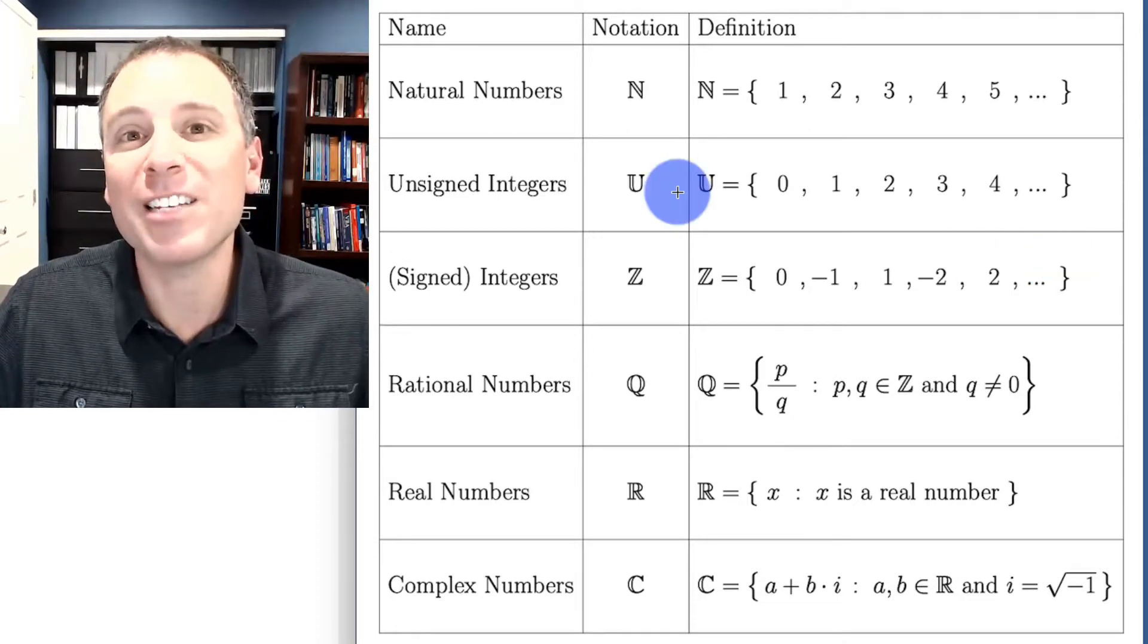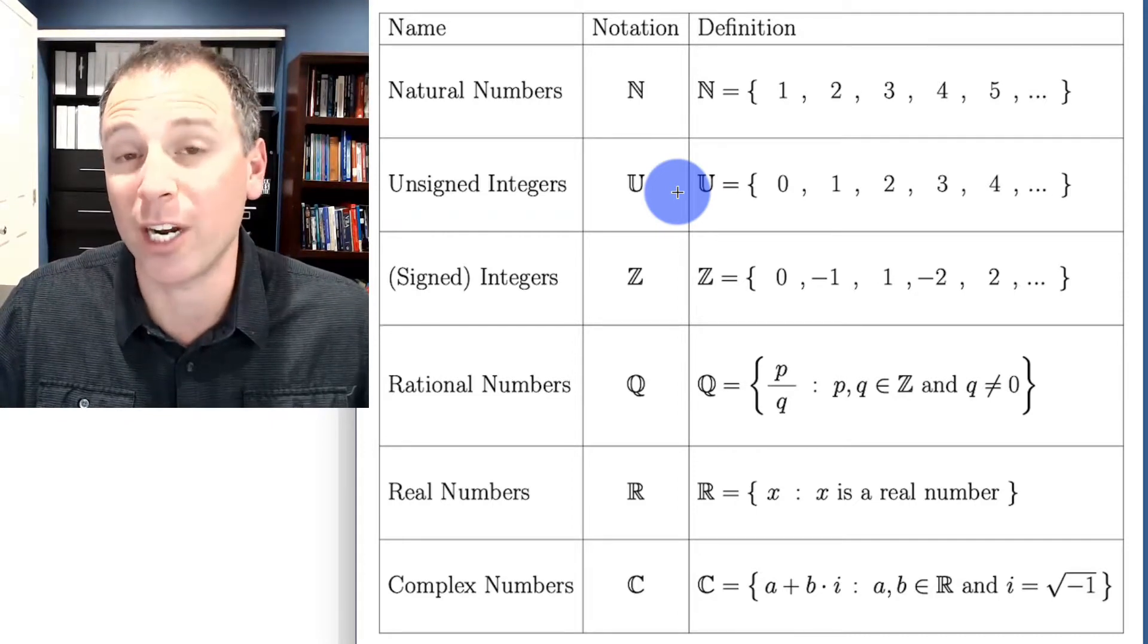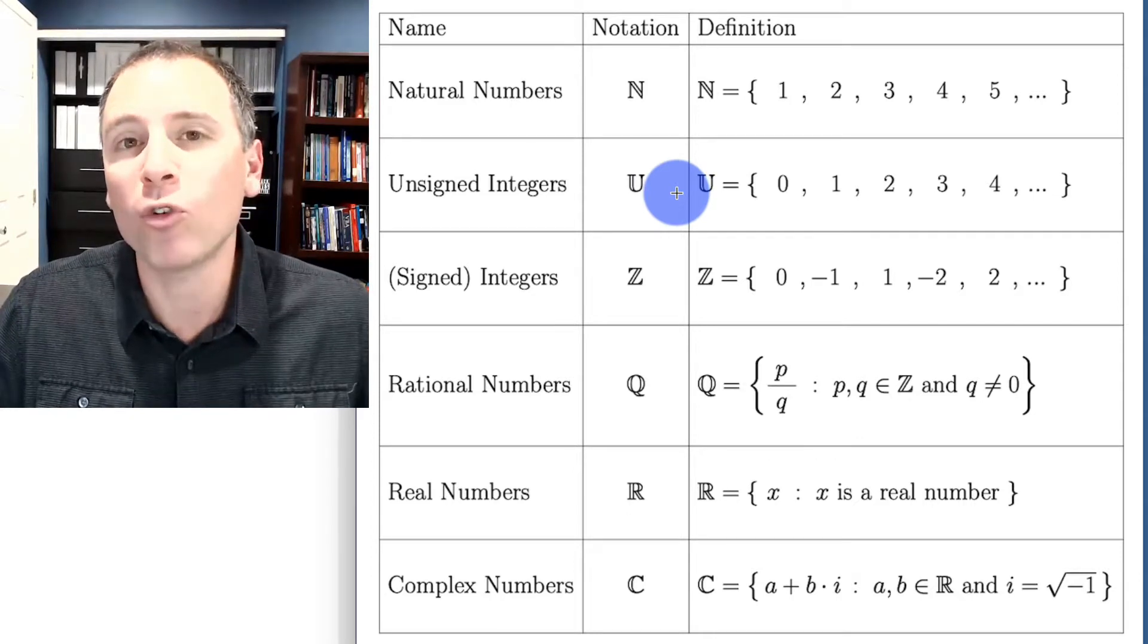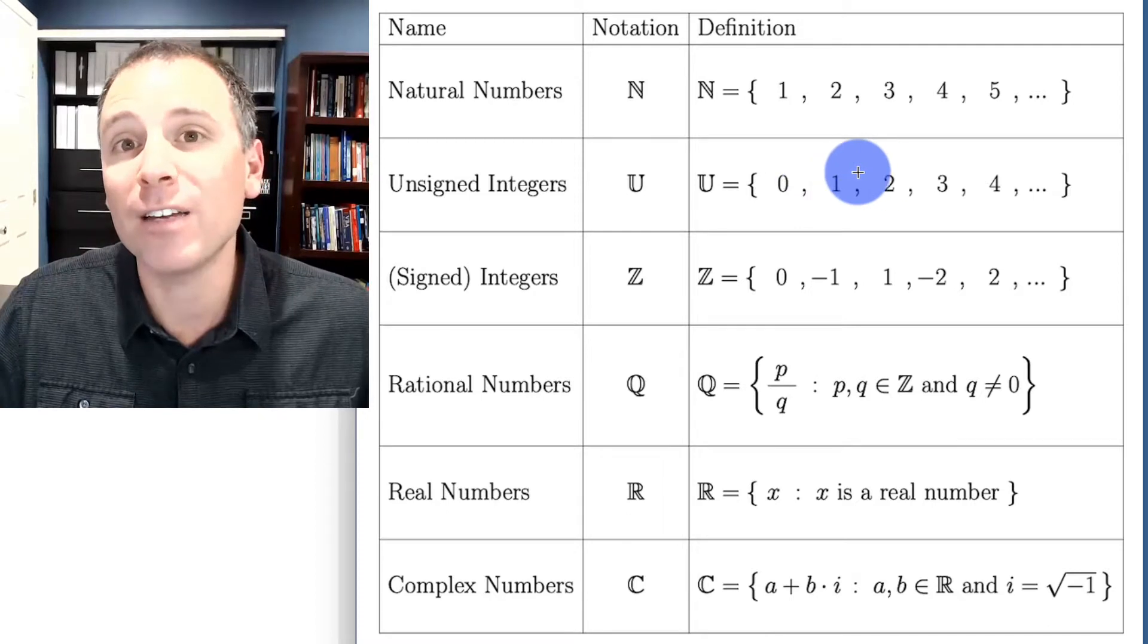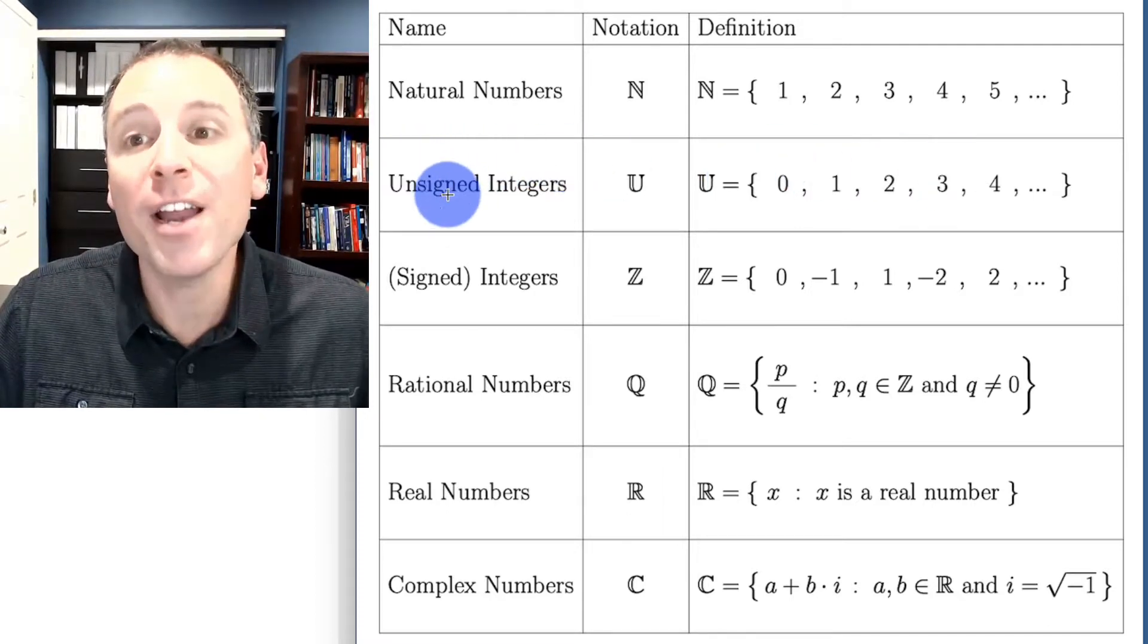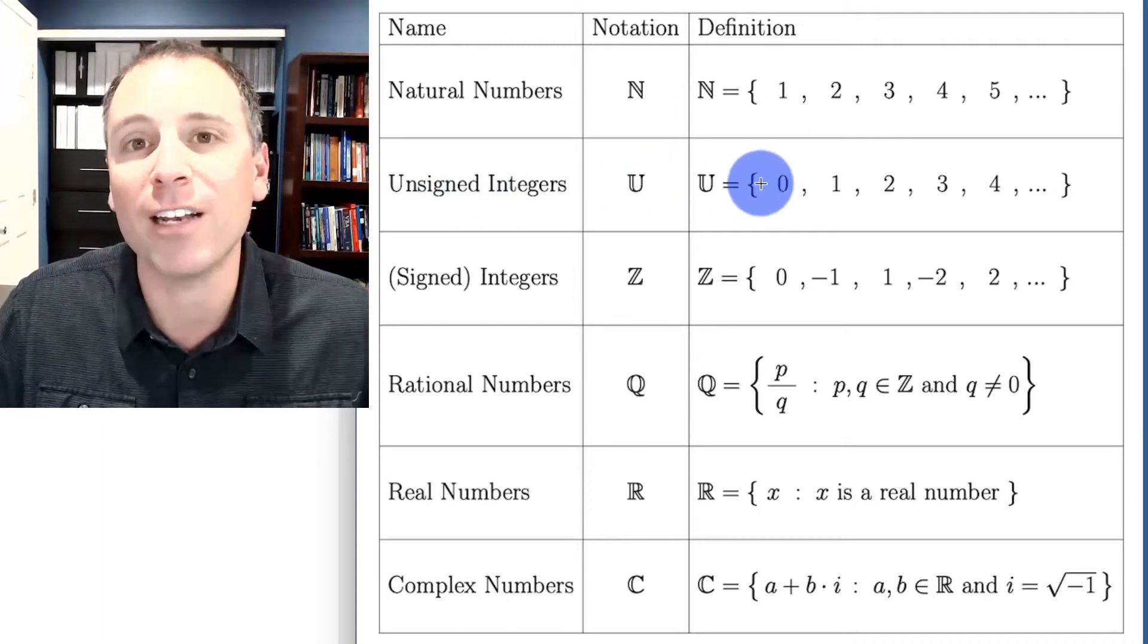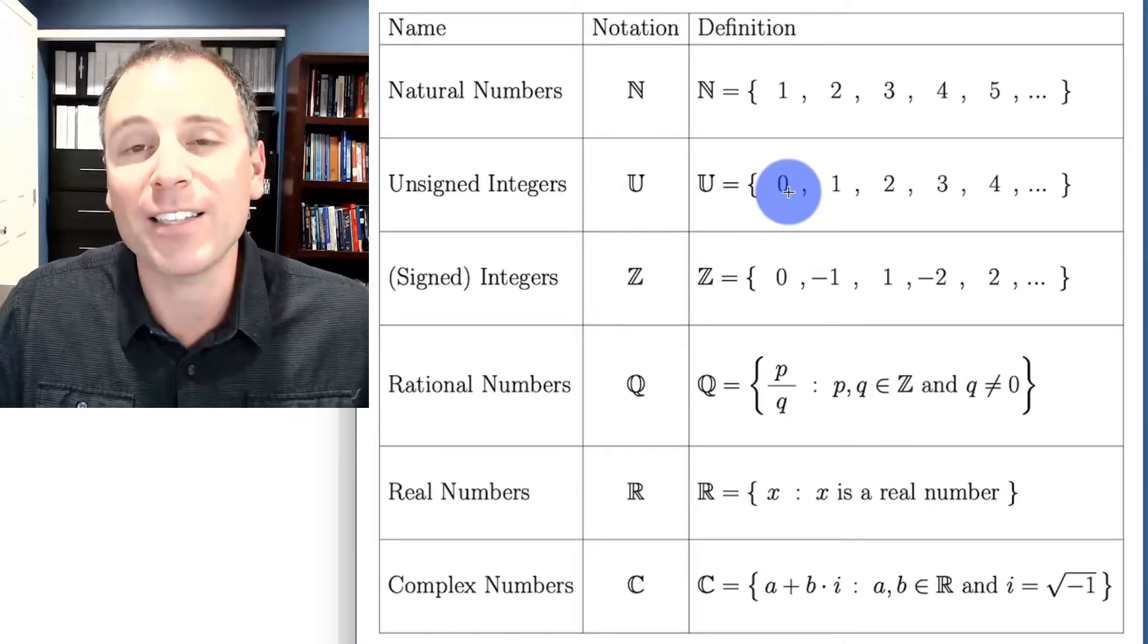However in computer science because of the idea of encoding numbers using binary representations, we're going to talk a lot about that in this lesson, it is really helpful to have a special set that includes the positive counting numbers as well as 0. Computer scientists call these the unsigned integers. So unsigned integers are non-negative integers. In other words, they're the natural numbers as well as the number 0.